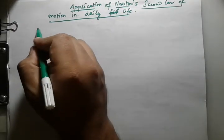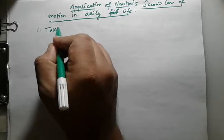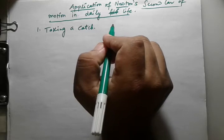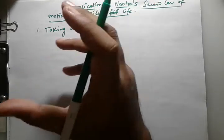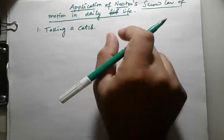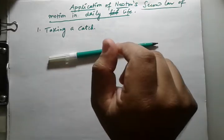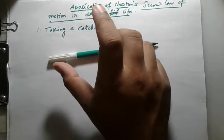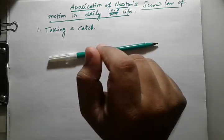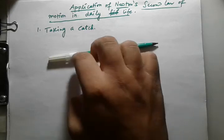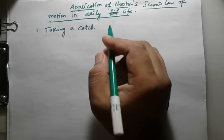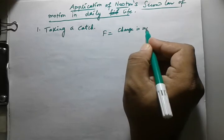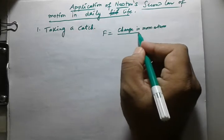The first application is taking a catch. In cricket, the fielder lowers his arms backward while taking the catch. The reason is that by doing so, the fielder increases the time and decreases the rate of change of momentum. According to Newton's second law of motion, force F is equal to change in momentum divided by time.